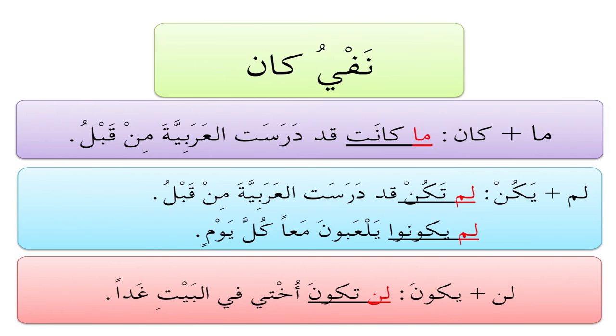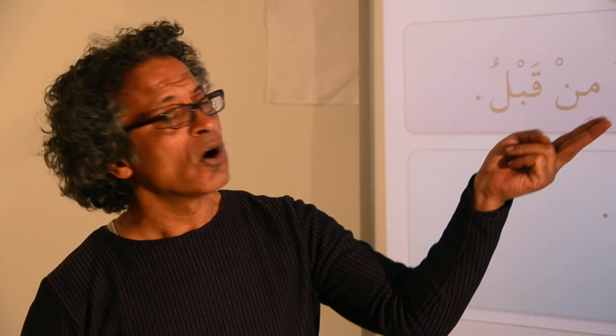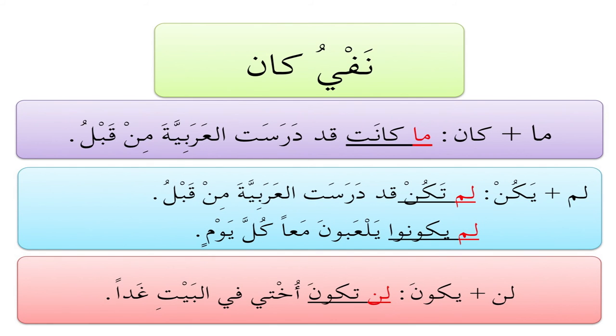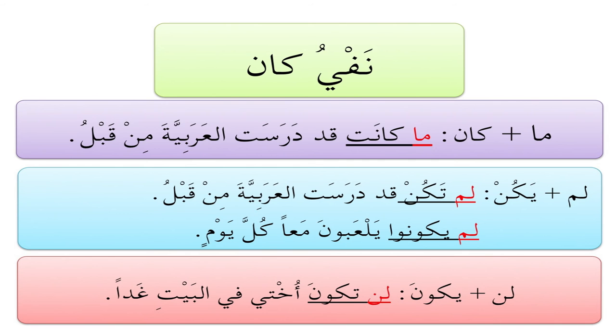Now, how do we negate كان in these combinations? We can put ما — used for the past — in front of كان. Example: ما كانت قد درست العربية من قبل — she had not studied Arabic before. We can also use لم مع كان في المضارع المجزوم: لم تكن قد درست العربية من قبل — she had not studied Arabic before. And: لم يكونوا يلعبون معاً كل يوم — they did not used to play together every day, negating a habit in the past.